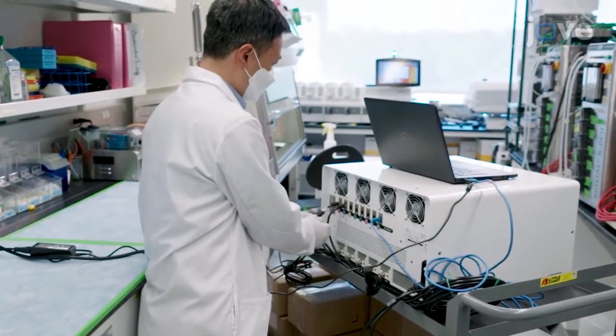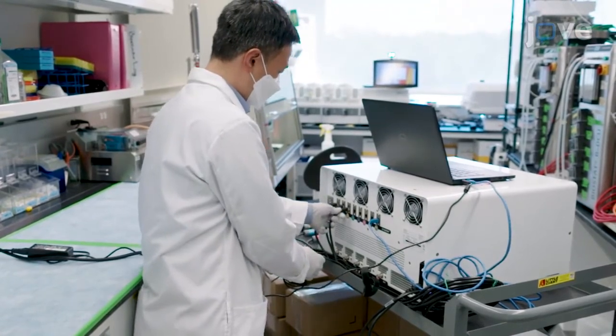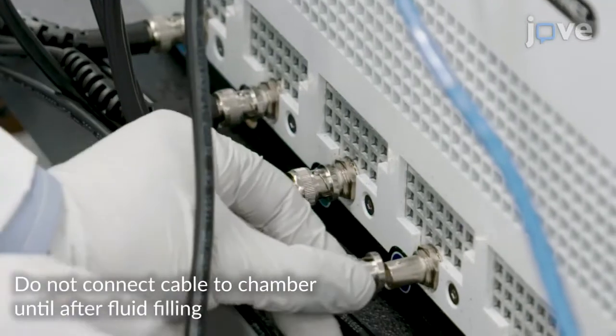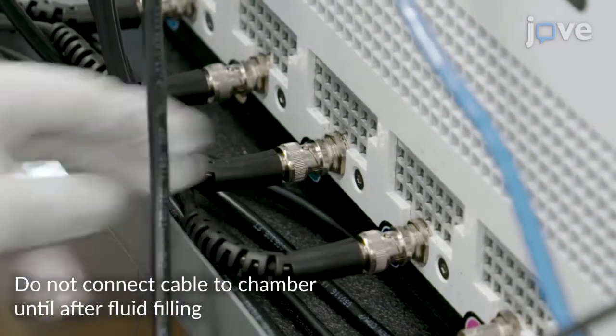To prepare the acoustic wave separator, connect the turbidity cables to their respective ports and connect the chamber power BNC cables to the back of the acoustic wave separator system.